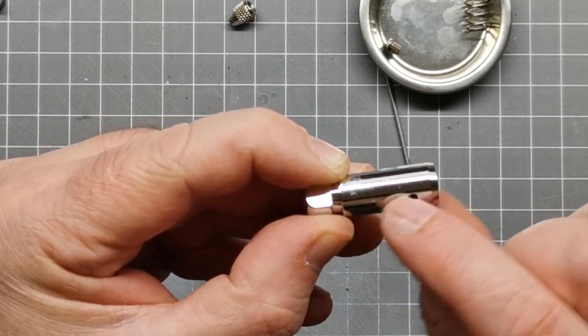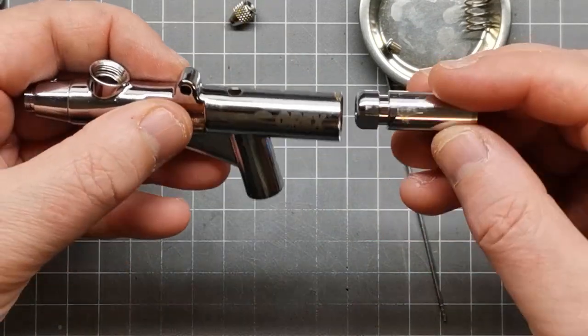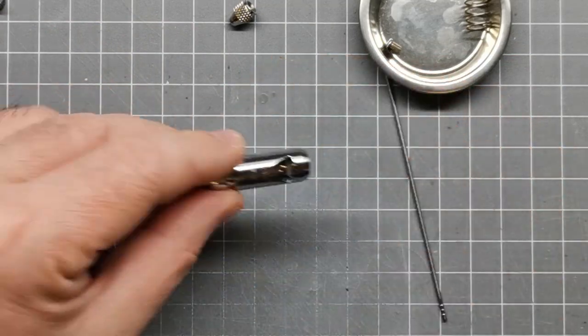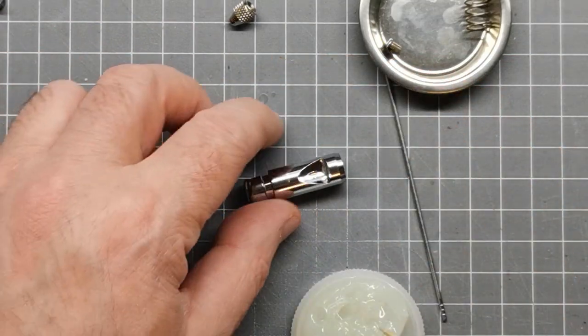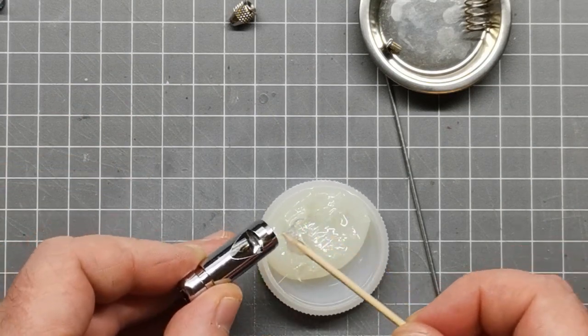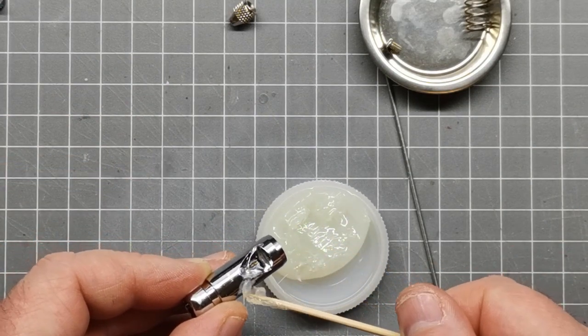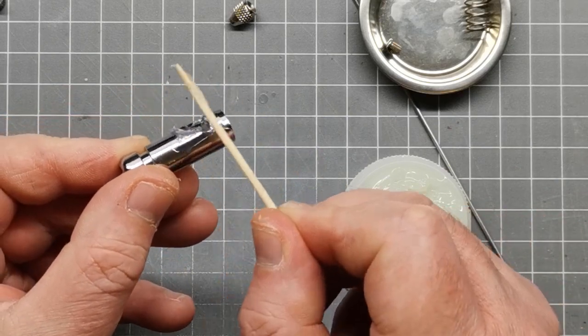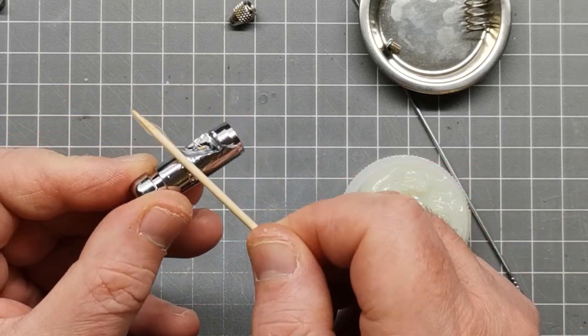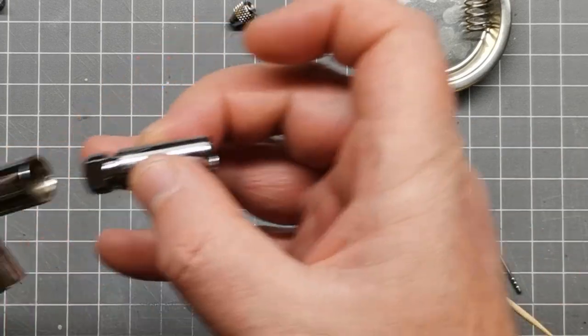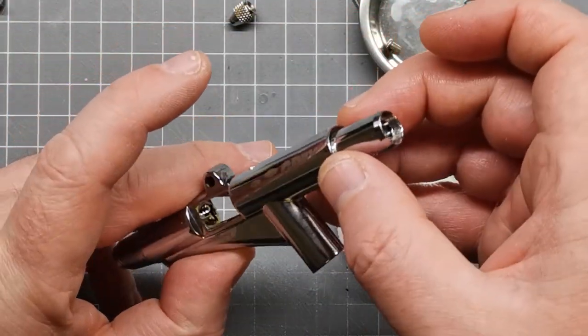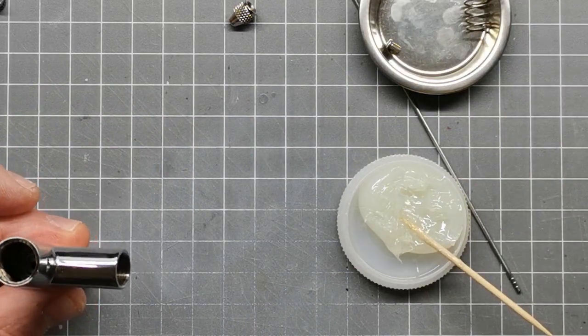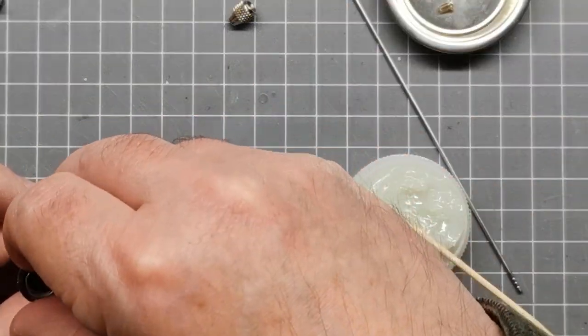That should be in there nice and tight now. The next part I need to put in is the slider. What I'm going to do is put a bit of grease just in here. Because when this goes in, I obviously want it to be lubricated. So, let's get grease and lubricate up the slider. Probably put a little bit too much on there. This slides down here. Make sure I put it in the right way. There is a spring which goes in here.